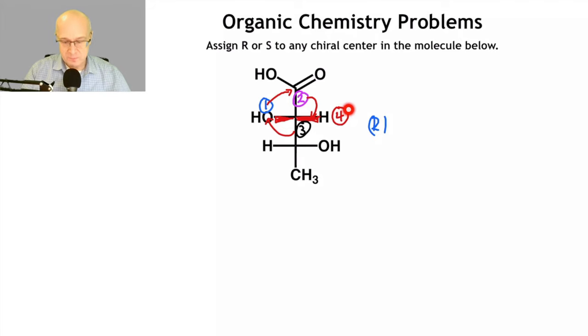And in this drawing, they're facing towards me. So this is not R. It cannot be R. It appears to be R. But remember, the low priority group is facing me.